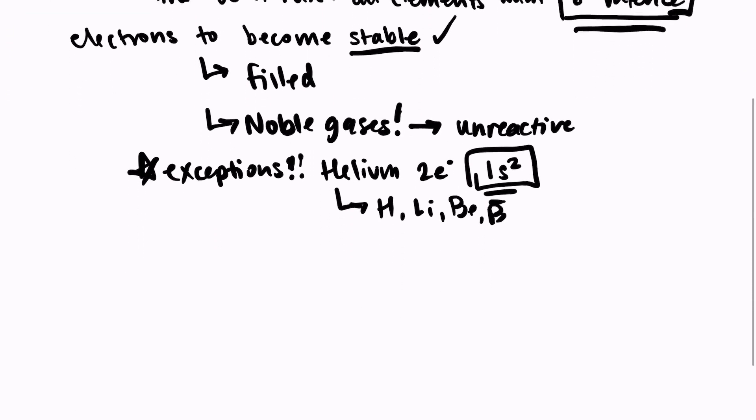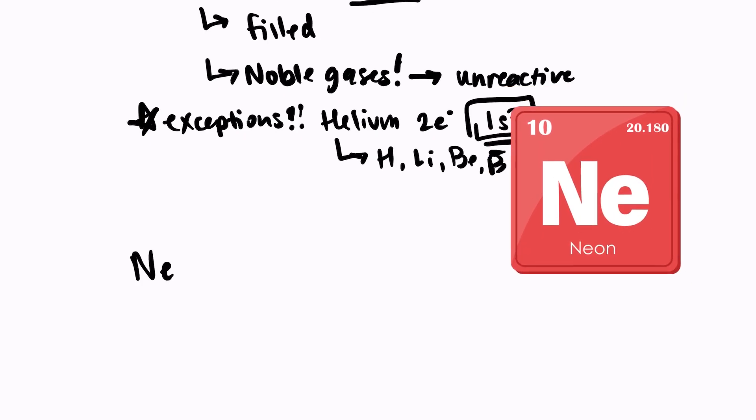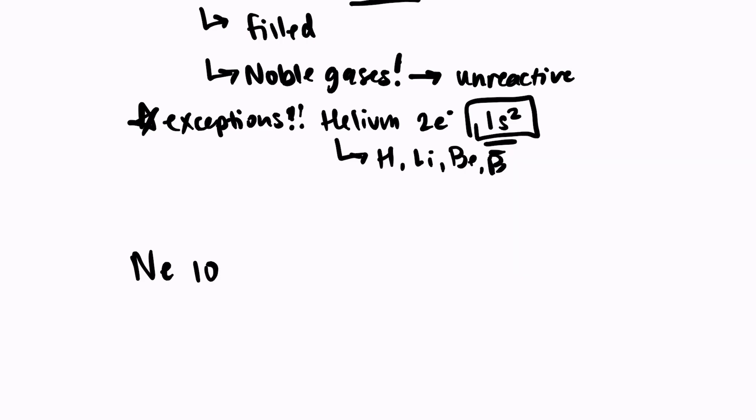Let's look at one of the noble gases. Neon has an atomic number of 10, which means there's 10 electrons. So if we look at the electron configuration, it would be 1s2, 2s2, 2p6. We have a completely filled second energy level. S can hold two electrons, P can hold six. Both of those are completely filled up.